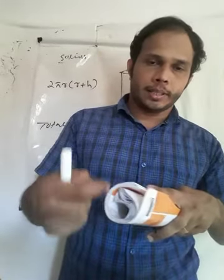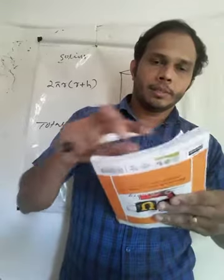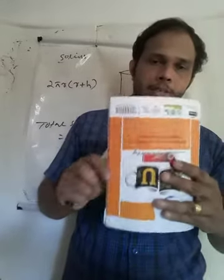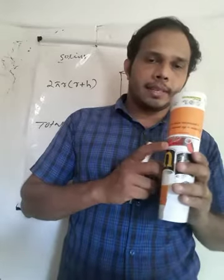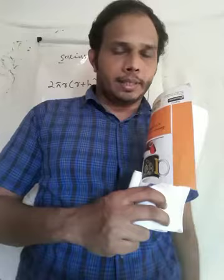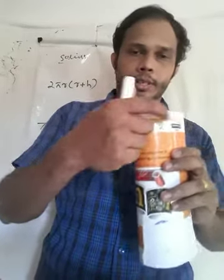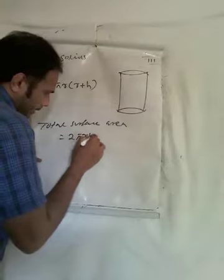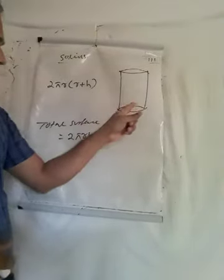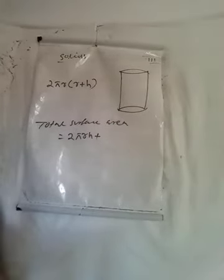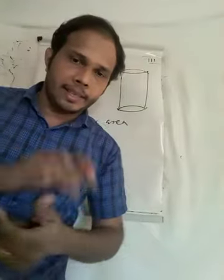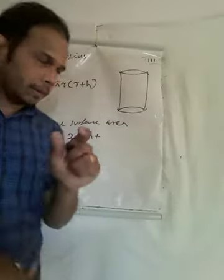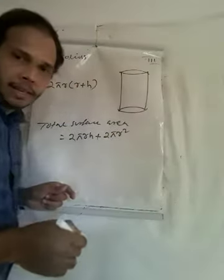One dimension of that rectangle is the circumference of the circle, which is 2πr. The other dimension is the height h. So the curved surface area is 2πrh. The top and bottom faces are circles, each with area πr². So two circles give 2πr².